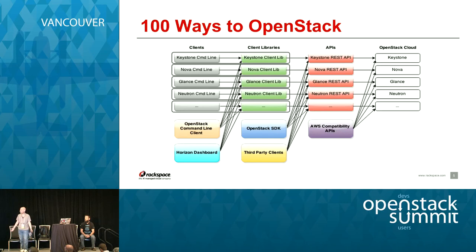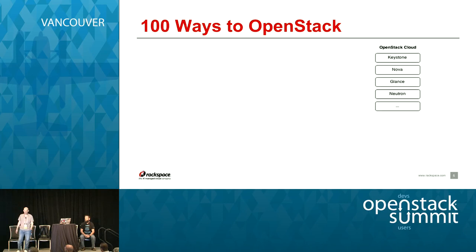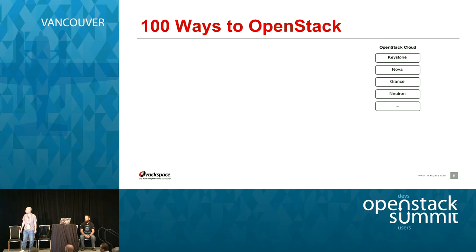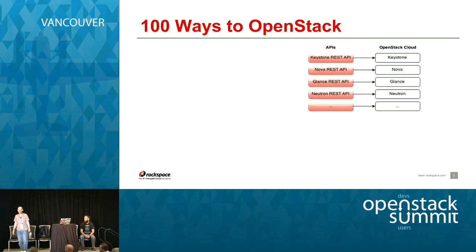As you can see, it's fairly complicated, so I'm going to walk you through it one step at a time. You have your cloud, which is a bunch of services — Keystone, Nova, et cetera. Some are optional, some are core modules. And as you probably know, each of these modules has a REST API.